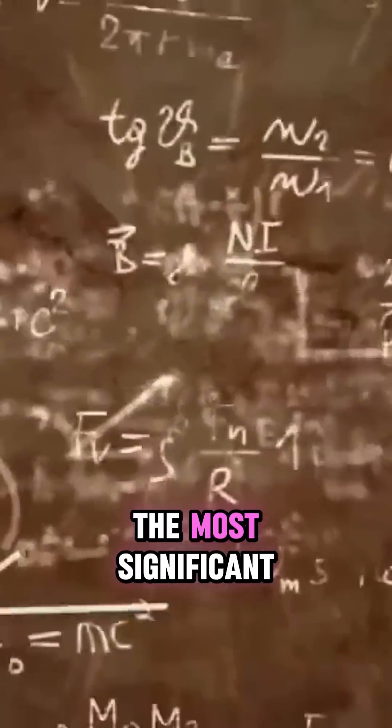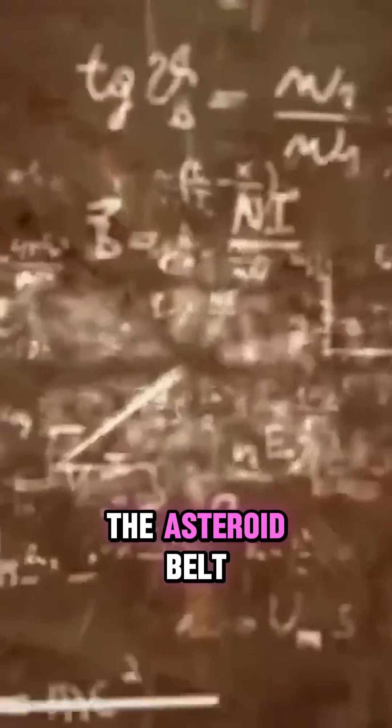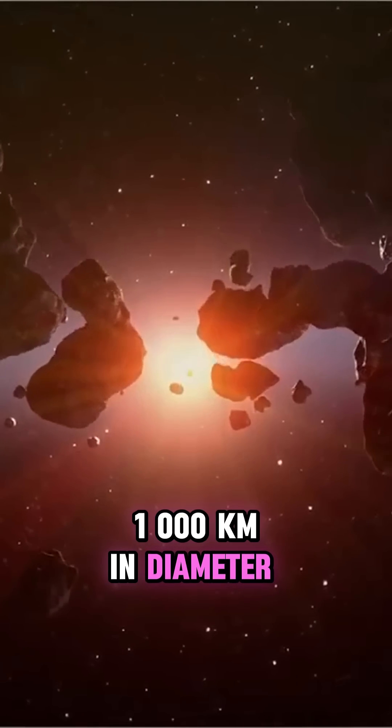Mathematical models have shown that the most significant formations in the asteroid belt never exceeded 1,000 kilometers in diameter.